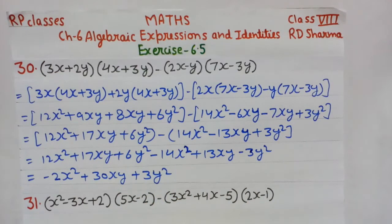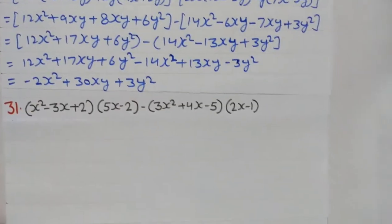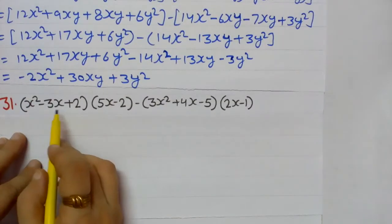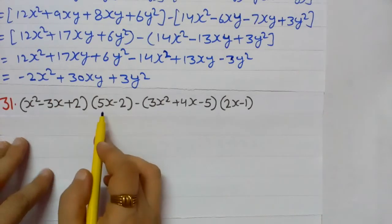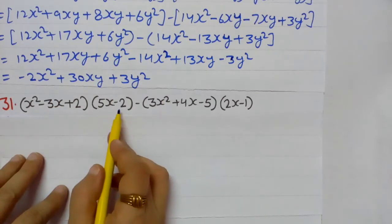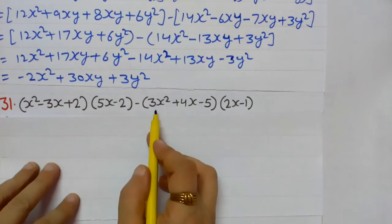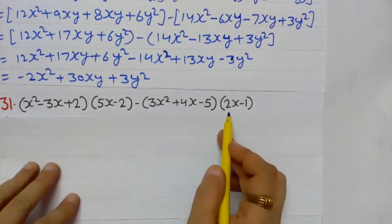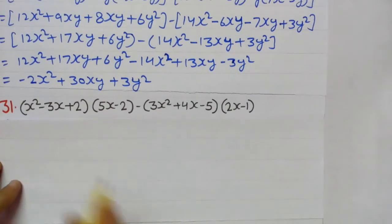Next question: (x² − 3x + 2)(5x − 2) − (3x² + 4x − 5)(2x − 1). In this also, I apply the distributive property. I am breaking the second bracket and multiplying with the first bracket.